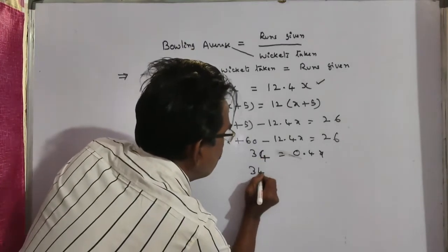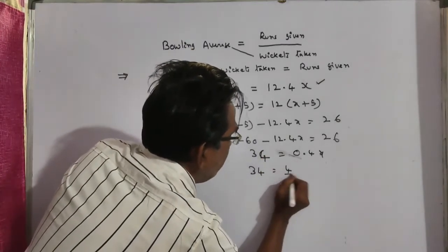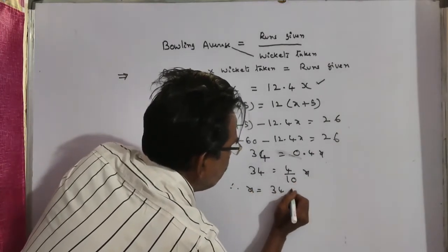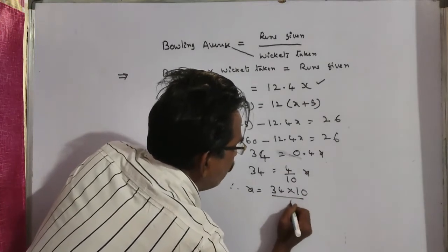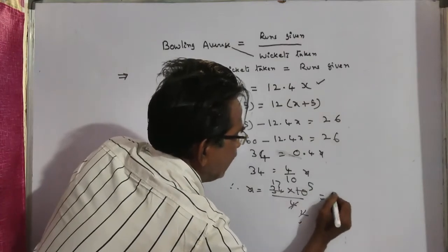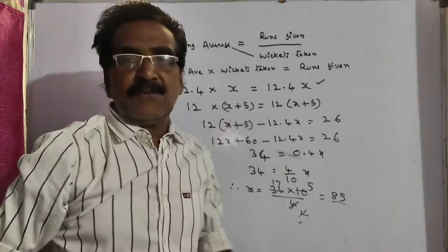So, 34 is equal to 0.4 means 4 by 10 into x. Therefore, x is equal to 34 into 10 by 4, cancel to 2s, to 17s, to 1s, to 5s, 17, 5s to 85 is your answer, friends.